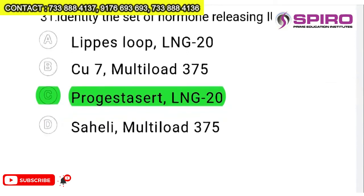Question 31: identify the set of hormone-releasing IUDs. Progesta-cert and LNG-20 are the two hormone-releasing IUDs. LNG-20 stands for long-term contraception with levonorgestrel releasing 20 micrograms (MCG) per day. These are the two intrauterine devices that release hormones.